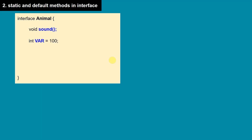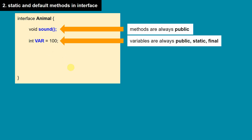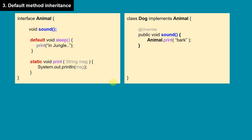Now let's see static and default methods in interfaces. Until Java 7, we could write abstract methods and variables. Abstract methods are implicitly public, and variables are implicitly public, static, and final. From Java 8, we can also write default and static methods in interfaces. Static methods have the same syntax as in a class, while default methods start with the new keyword default.